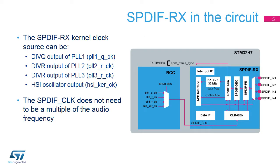The RCC, or Reset and Clock Control block of the STM32-H7, provides both the APB clock and the SPDIF-CLK kernel clock to the SPDIF-RX. For better flexibility, the SPDIF-CLK can be selected from four different sources: the DIV-Q output of PLL-1, the DIV-R output of PLL-2 or PLL-3, or the HSI oscillator output. The signal SPDIF frame sync provided by the SPDIF-RX is connected to a timer, and the application can use it to perform a clock drift estimation between the two audio streams.